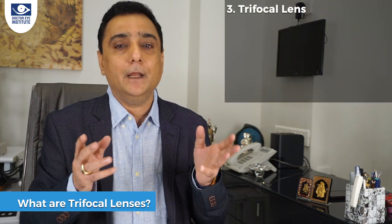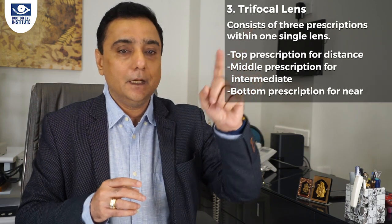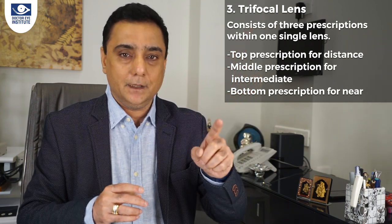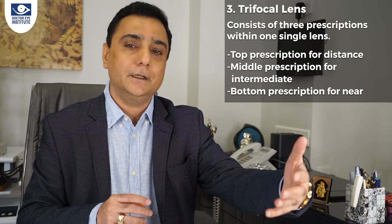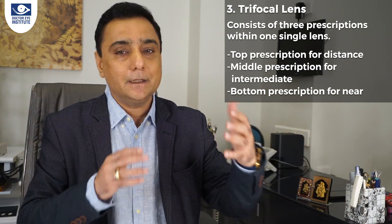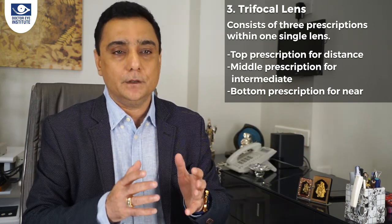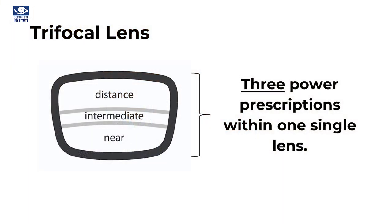The next type is called the trifocal. Trifocal — simple English — covers three distances: distance, intermediate (which is your iPad or computer distance, also called the working distance), and near vision. There are three lines present in that kind of lens.